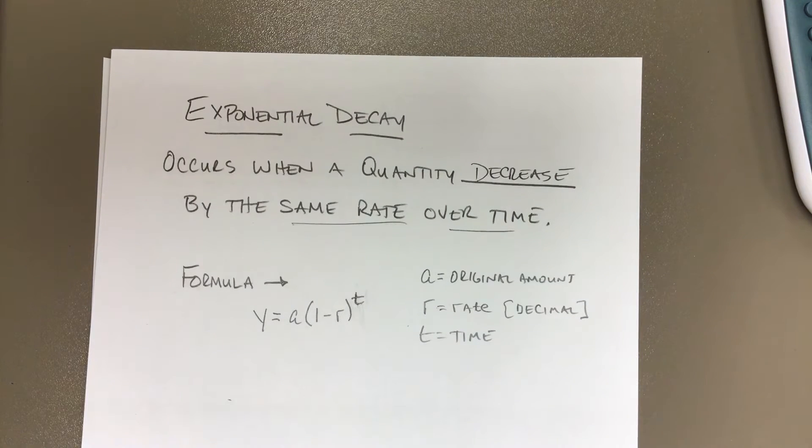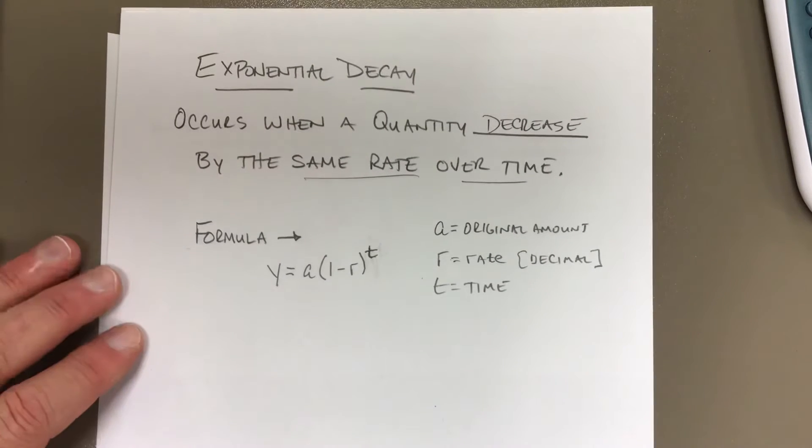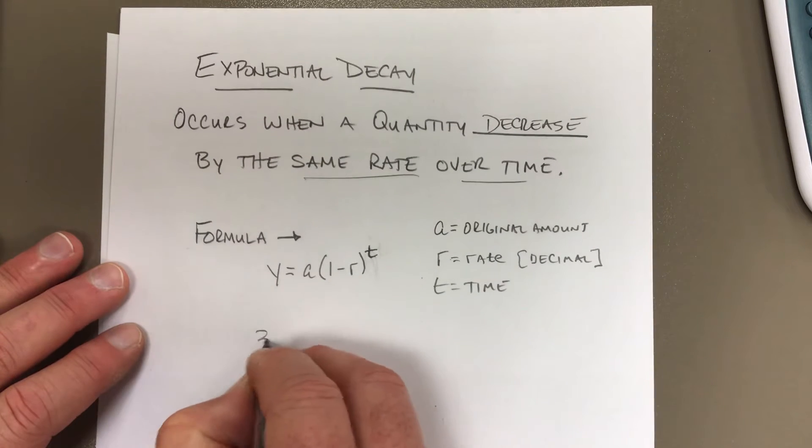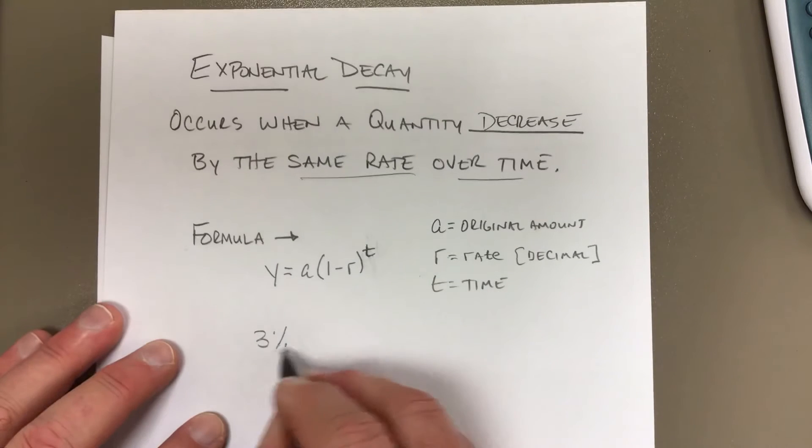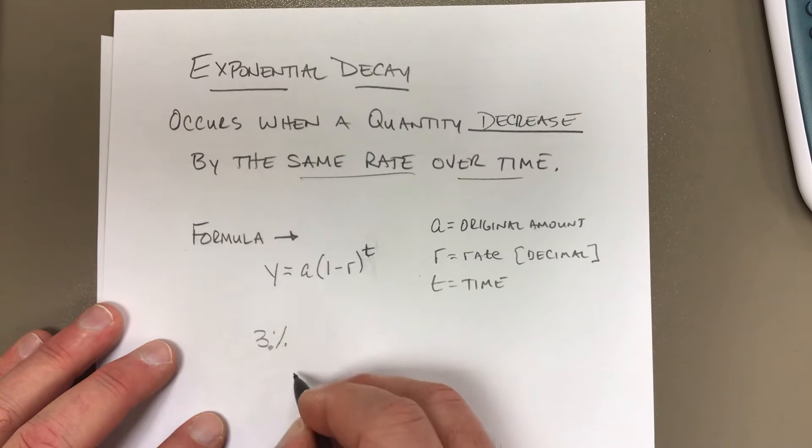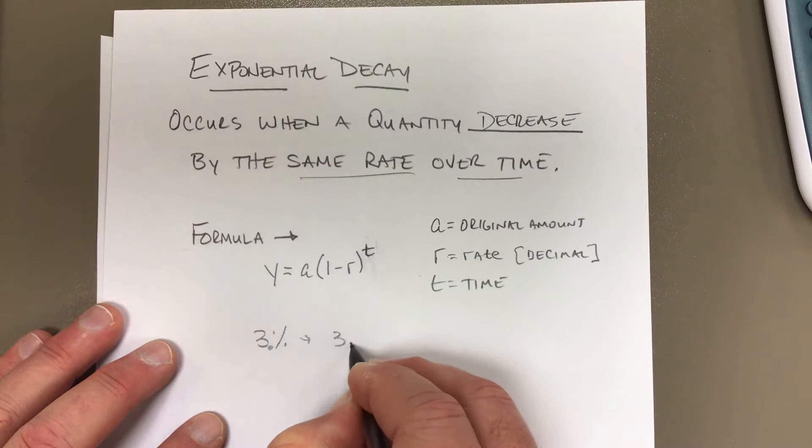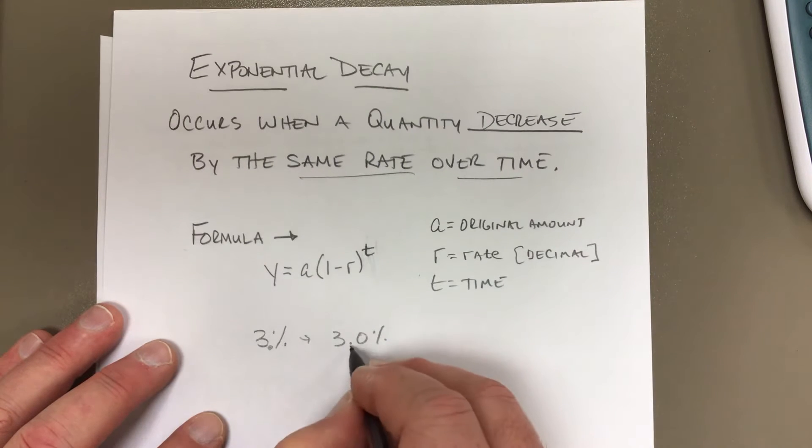Now, when we're talking about decimals, the rate most of the time is given to us in a percent, like 3%. So in this case, something's going to be losing by 3%. So what does that mean? That means that we got to change this to a decimal. So we have to think that the decimal sits over here.